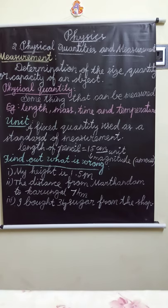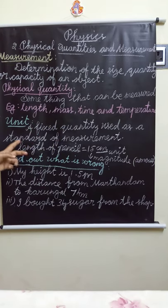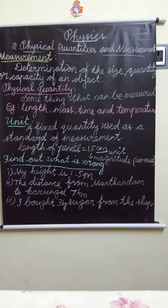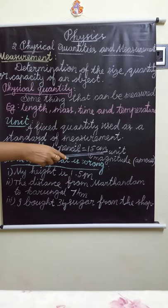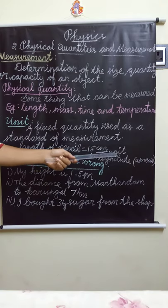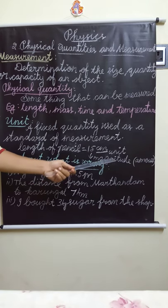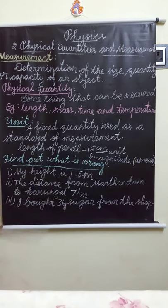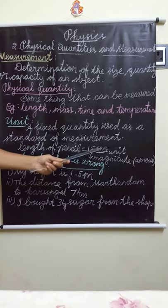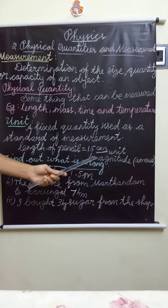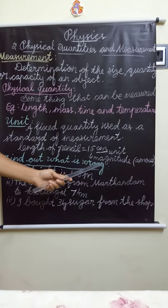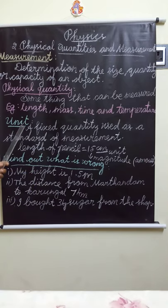Next is unit. A fixed quantity used as a standard of measurement is called a unit. When we say that the length of a pencil is equal to 15 centimetres, here centimetre is the unit and 15 is the magnitude. Magnitude means the amount. So the length of the pencil is 15 centimetres — centimetre is the unit, and 15 is the magnitude.